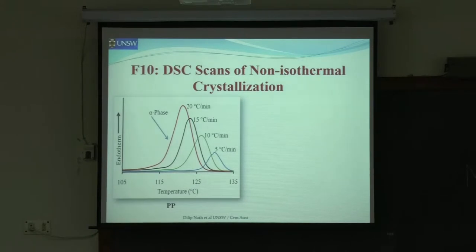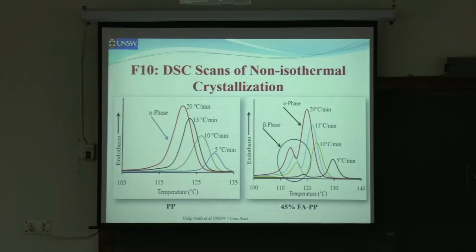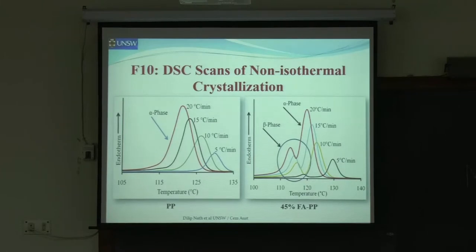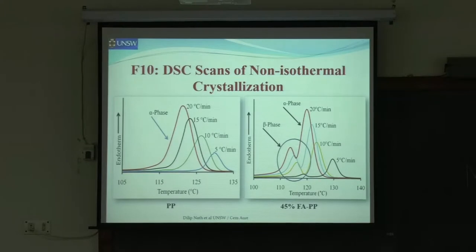Notice this — this is the alpha phase. This is the beta phase. You have different phases in plastics. The beta phase shows less endotherm. At 10 degrees C it remains almost the same, but the beta phase comes at a lower temperature. This shows different phases of the materials. This is without fly ash and this is with fly ash. When you put fly ash, you get a secondary phase — a secondary phase endotherm, so it absorbs the heat.